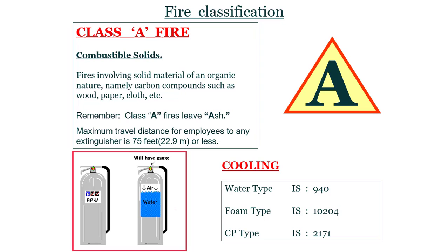Class A fire — combustible solids: fires involving solid material of an organic nature, carbon components such as wood, paper, cloth, etc. Remember, Class A fire leaves ash — when you burn wood or paper, you will get ash as a residue. Maximum travel distance for an employee to any extinguisher is 75 feet (22.9 meters) or less. For extinguishing Class A fire, cooling is the best method. Water type IS 940, foam type IS 10204, and DCP type IS 2171 are recommended.